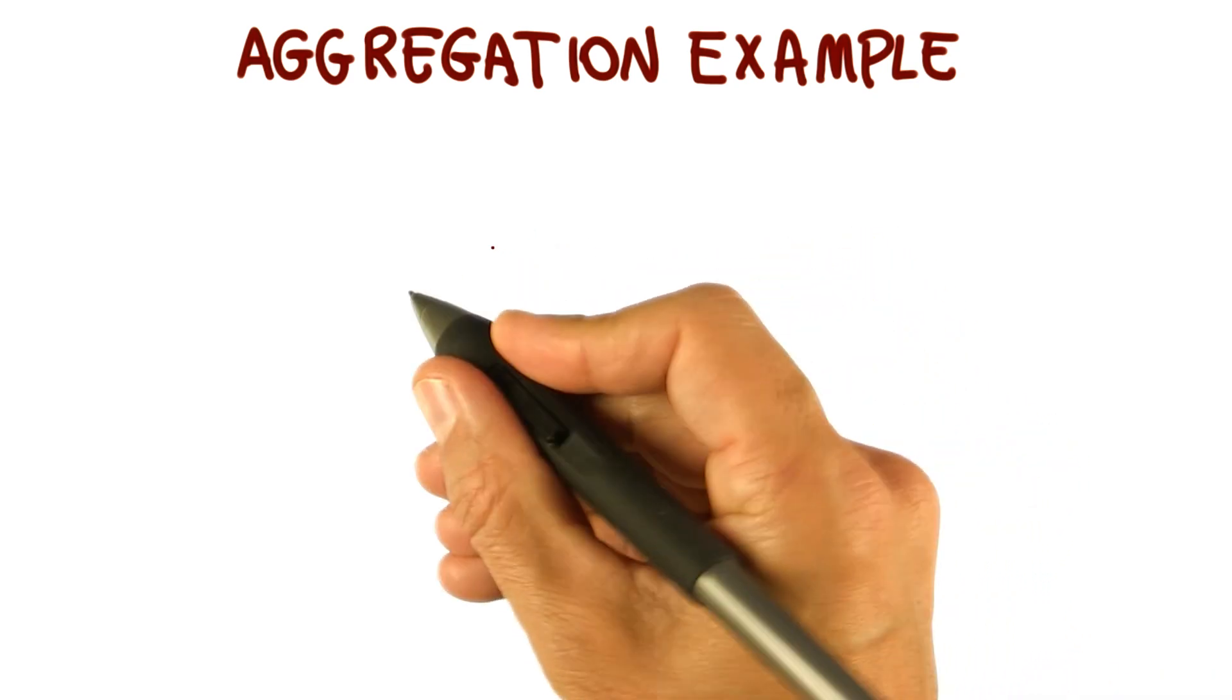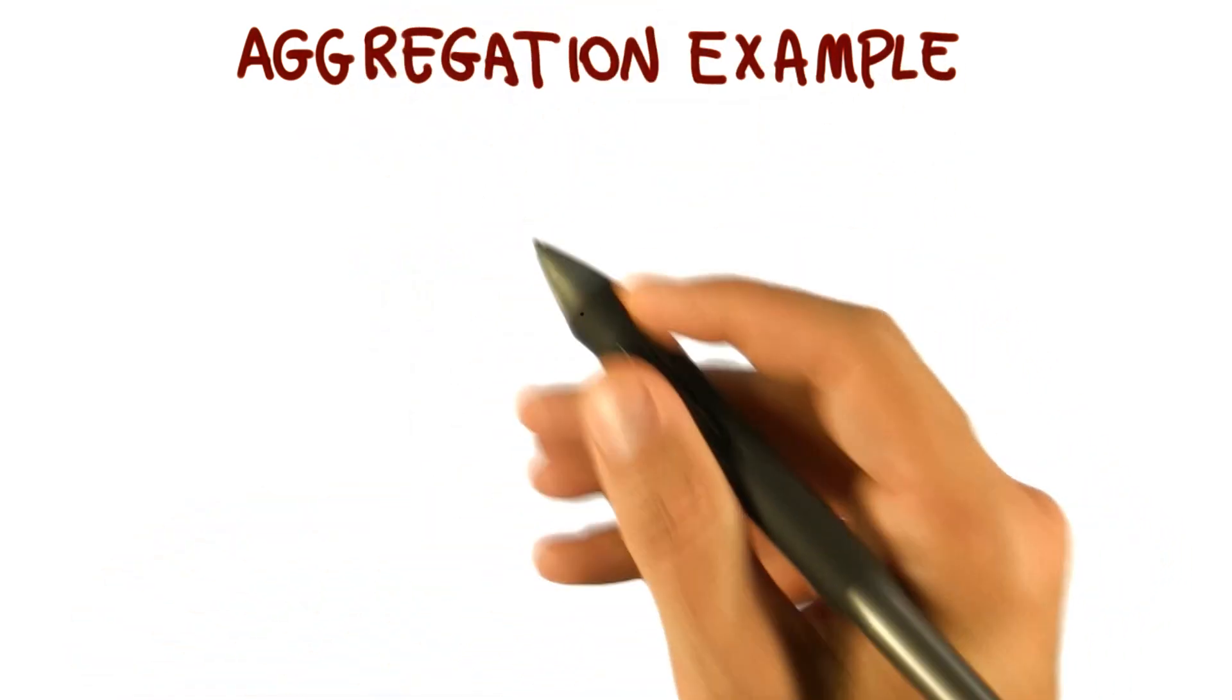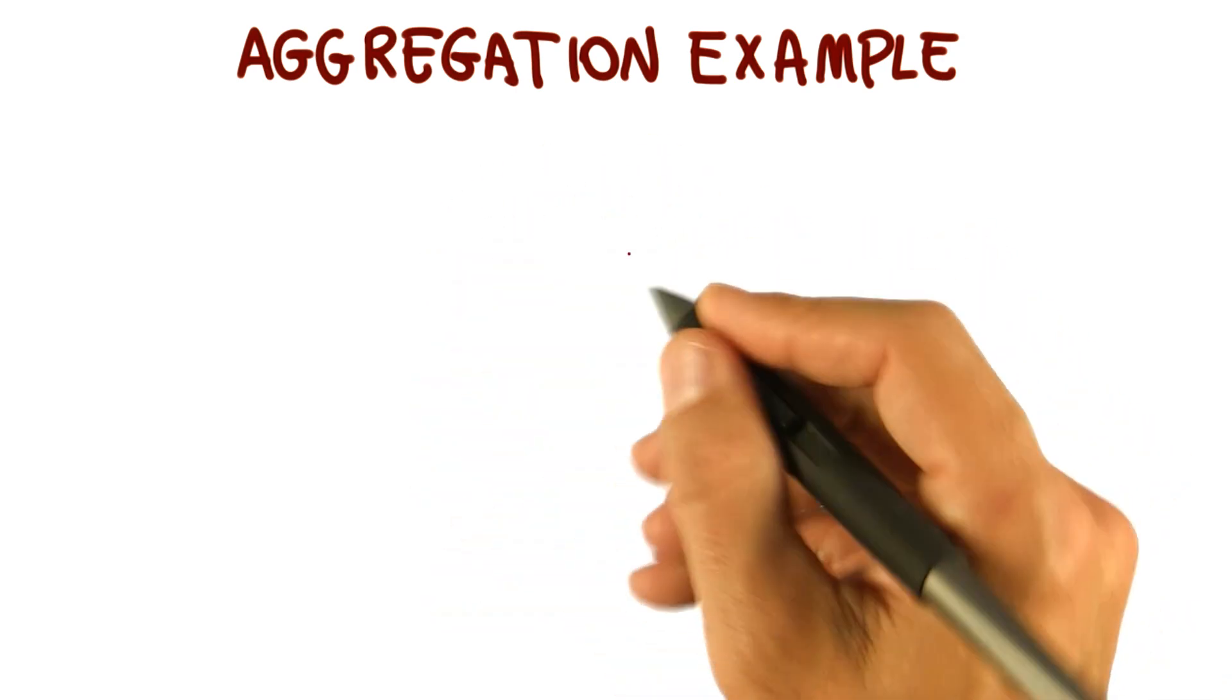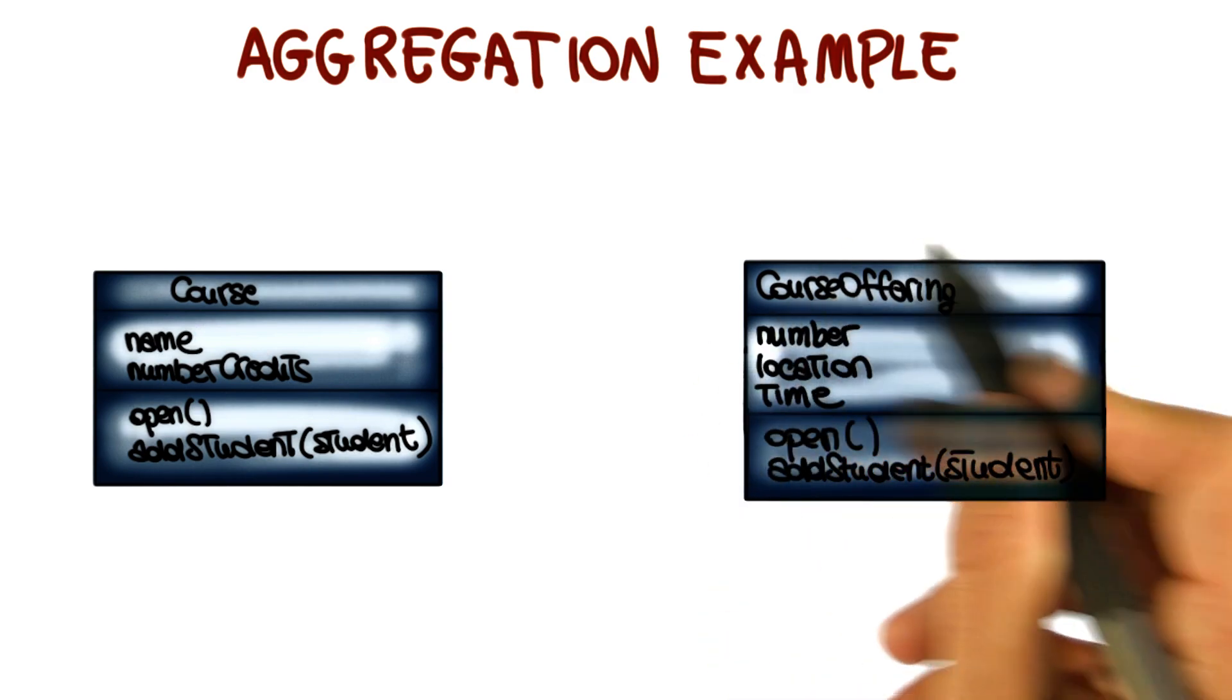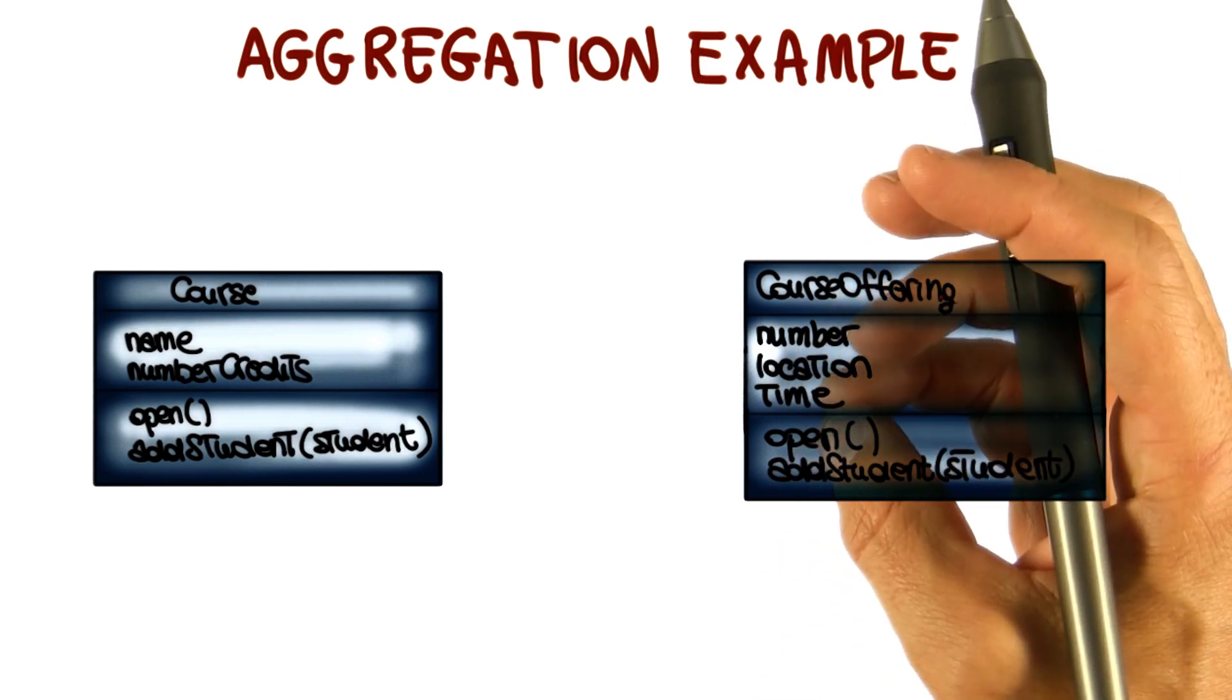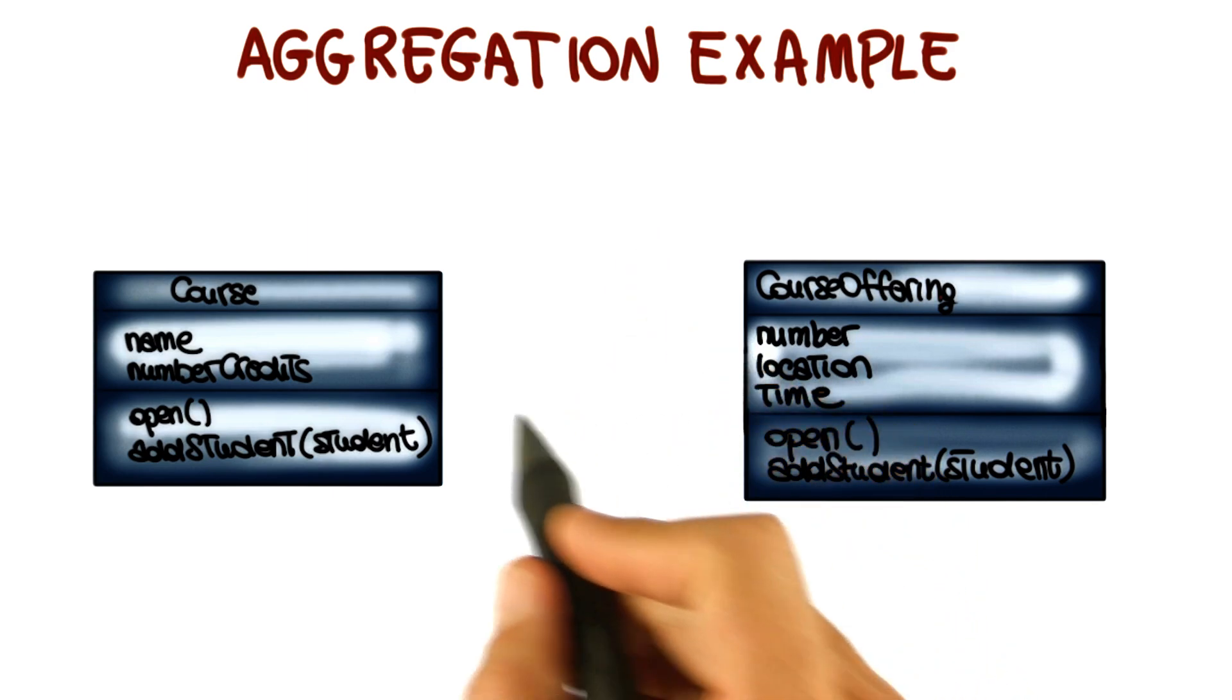An aggregation is a relationship between two classes in which one represents a larger class, like a whole, which consists of smaller classes, which are the parts of this whole. So let's look at an example in the context of our system. Let's consider a Course and the CourseOffering. In this case, we can see that the Course consists of multiple course offerings. So in a sense, a course is a whole, and the course offerings are the parts of this whole. So this is a perfect case in which we will use an aggregation to express this relationship.